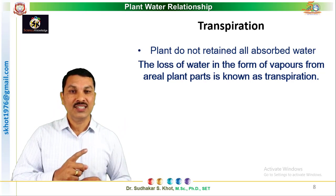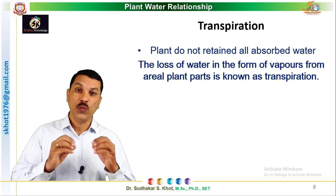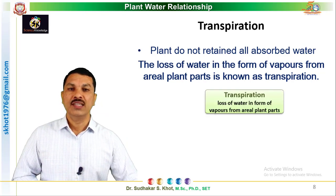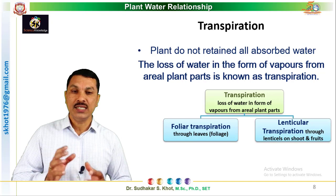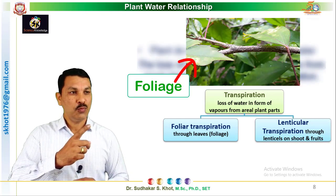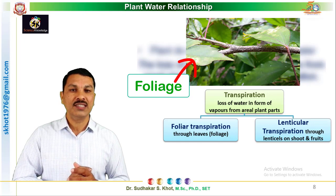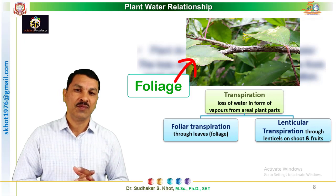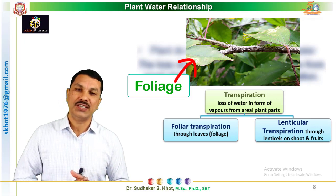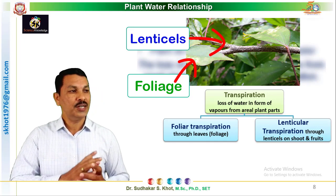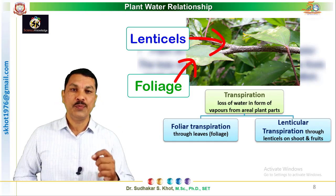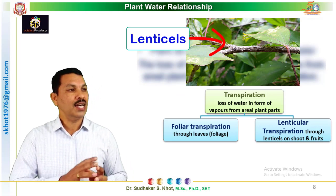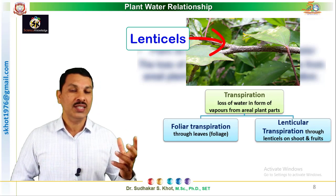Transpiration is the loss of water in the form of vapors from aerial plant parts. There are two major types. The first is foliar transpiration, which is the major type and accounts for about 80 to 90% of total transpiration. The second type is lenticular transpiration, where transpiration occurs through specialized cells called lenticels, which are present on stems as well as fruits.